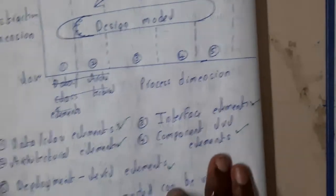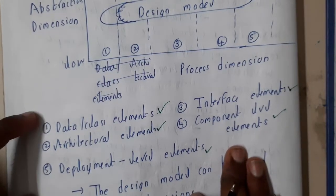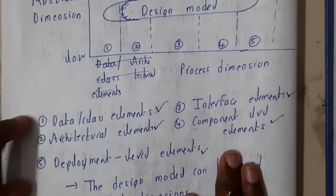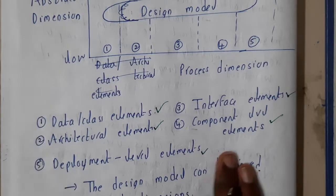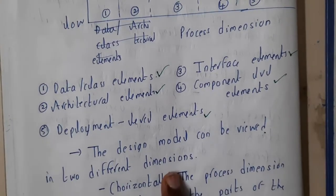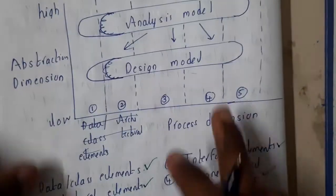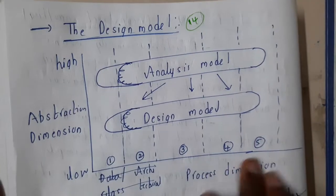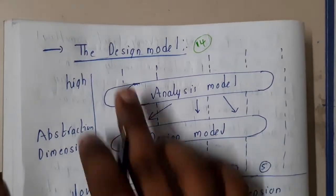The design model can be viewed in two different dimensions. Here you can observe this in two different dimensions - one is horizontal and the other is vertical.